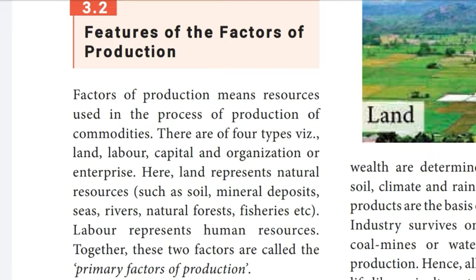When the factors of production are combined in order to produce something, a fourth factor is required. Goods and services do not produce themselves but need some conscious thought process in order to plan and implement manufacture. This thought process is often called entrepreneur or organization. Factors of production refers to those goods and services which help in the production process. There are four types: land, labor, capital and organization or entrepreneur.